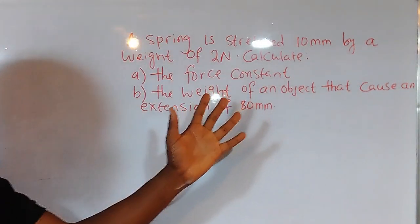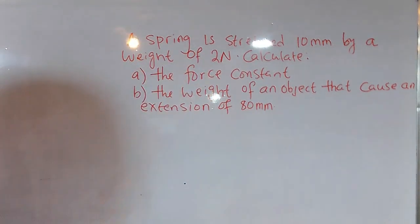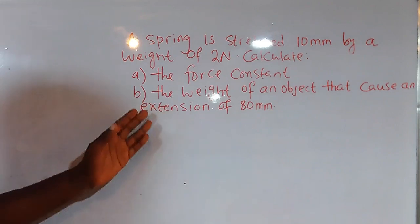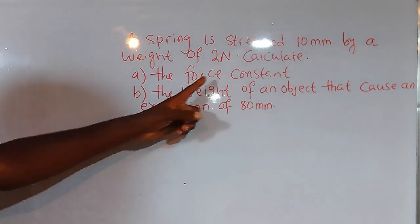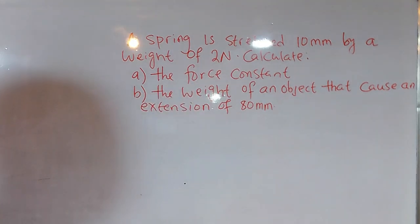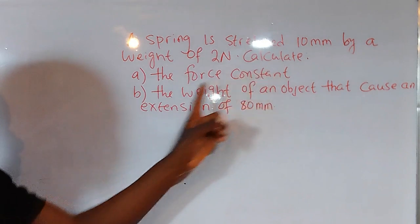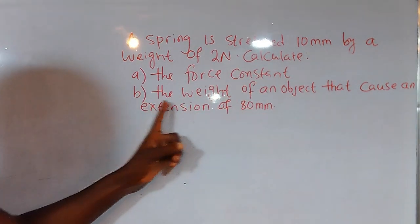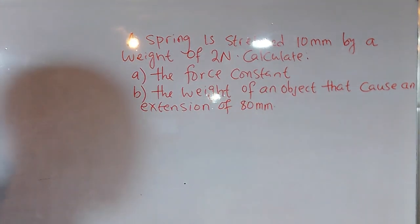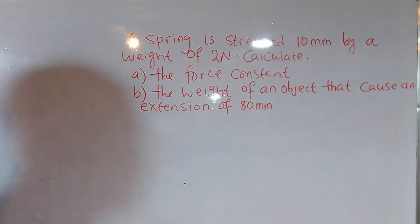We are told that a spring is stretched 10 millimeters by a weight of 2 newtons. Calculate: (a) the force constant, and (b) the weight of an object that causes an extension of 80 millimeters.